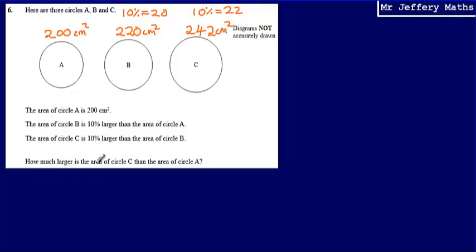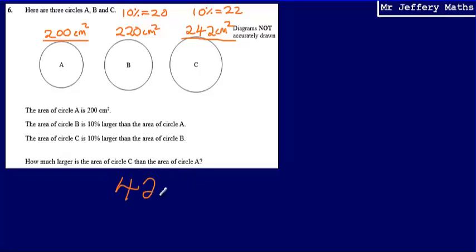So our question: how much larger is the area of circle C than the area of circle A? The area of circle A was 200 and the area of circle C is 242, so our final answer is 42 centimetres squared larger.